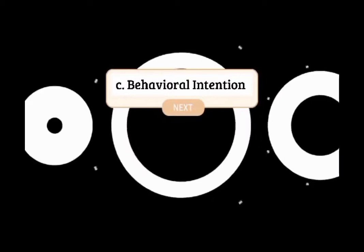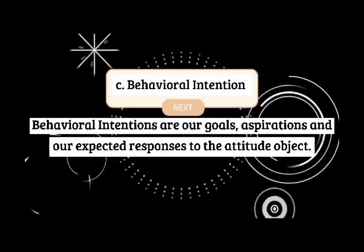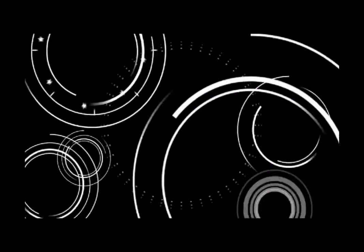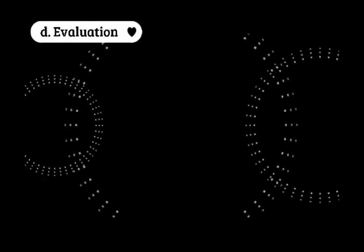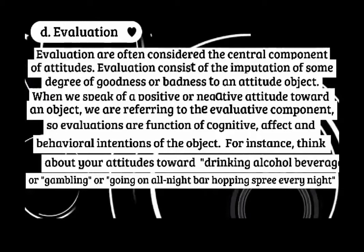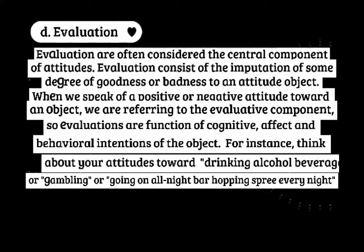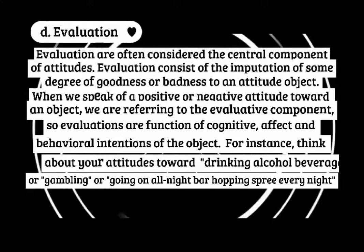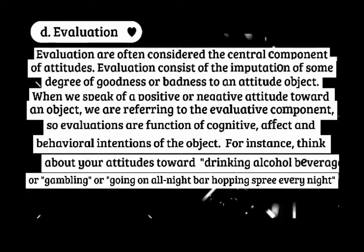The third component is behavioral intention — our goals, aspirations, and expected responses to the attitude object. The fourth and last component is evaluation. Evaluations are often considered the central component of attitudes and consist of the imputation of some degree of goodness or badness to an attitude object. When we speak of a positive or negative attitude toward an object, we are referring to the evaluative component. Evaluations are a function of cognition, affect, and behavioral intentions. For instance, think about your attitudes towards drinking alcohol, gambling, or going on all-night shopping sprees every night.